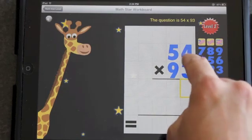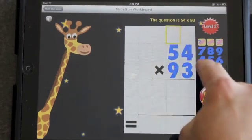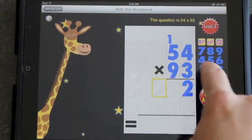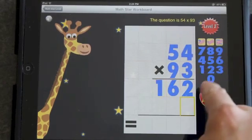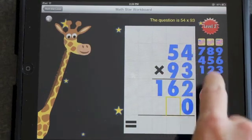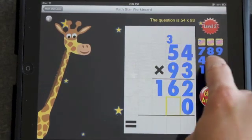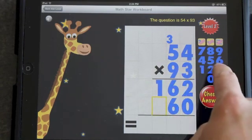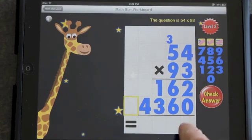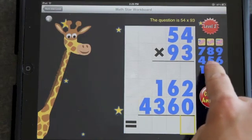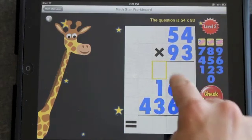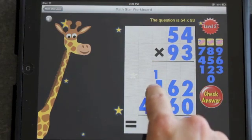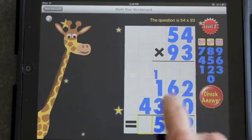So let's finish working this out. 3 times 4 is 12. 3 times 5 is 15 plus 1 is 16. Go to the second line. 9 times 4 is 36. And 9 times 5 is 40 plus 3, which is 43. And we can add this up. 2, the carry, 12. 6 plus 6 is 12. 1, 2. 1 plus 1 plus 3 is 5 plus 4.